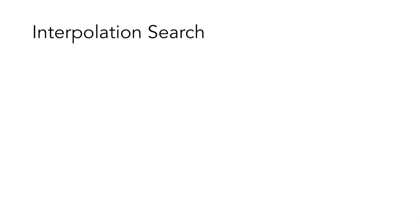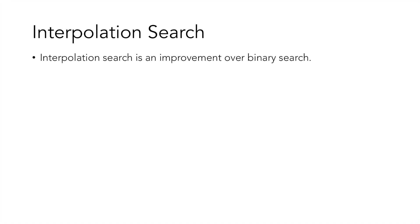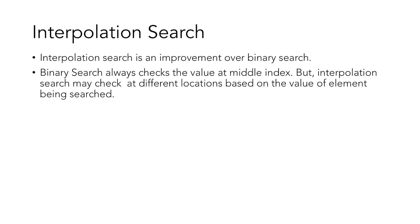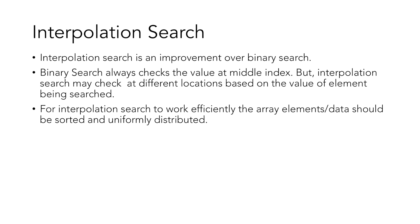Hello friends, in this tutorial we will learn about Interpolation Search. Interpolation search is an improvement over binary search. As binary search always checks the value at the middle index, interpolation search may check at different locations based on the value of the element being searched. For interpolation search to work efficiently, the elements of the array should be sorted and uniformly distributed.